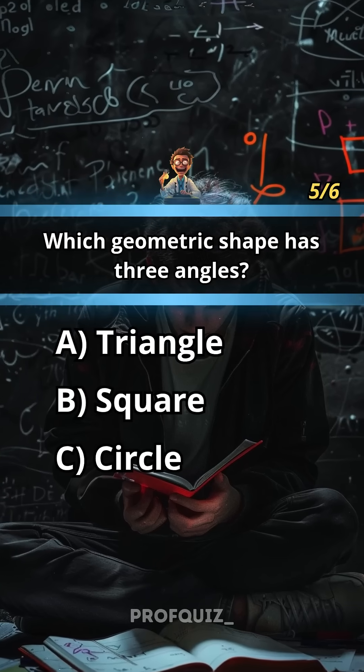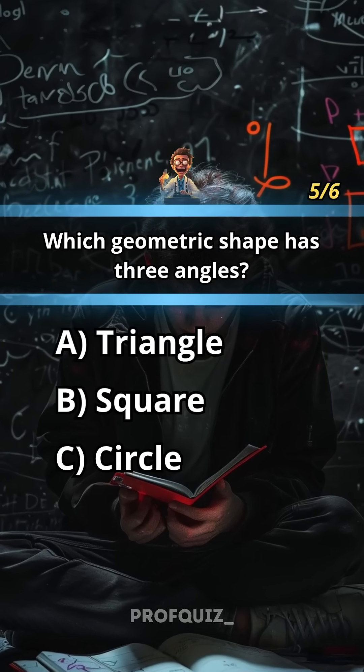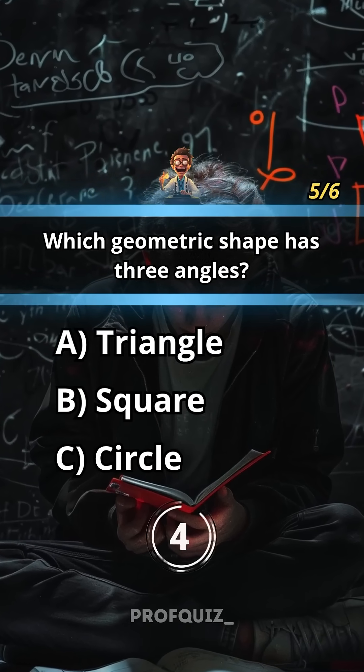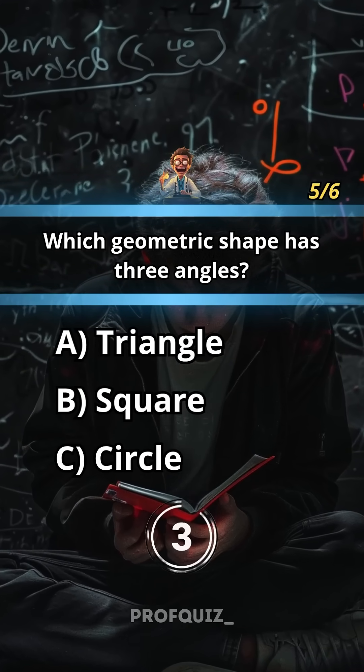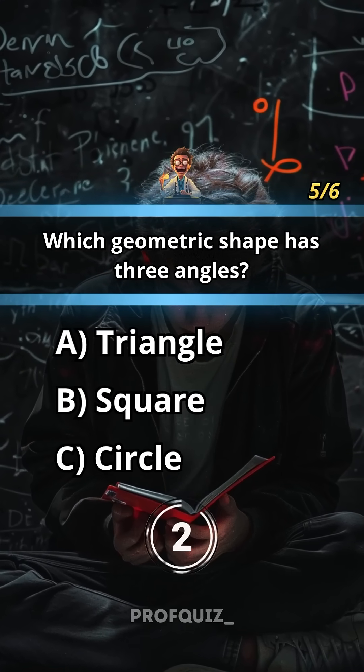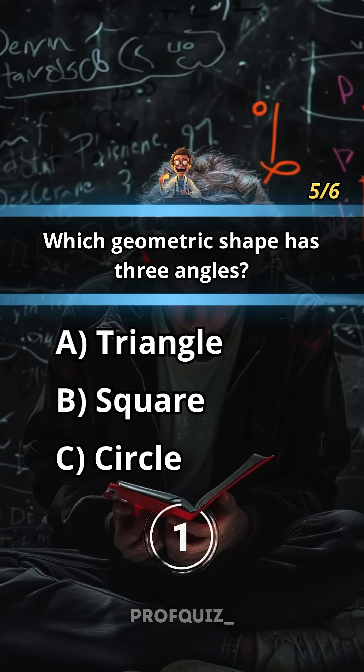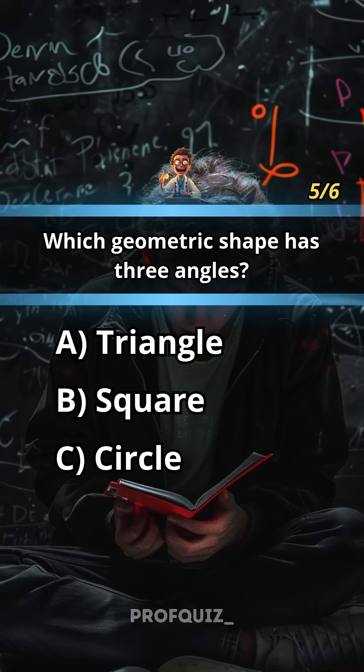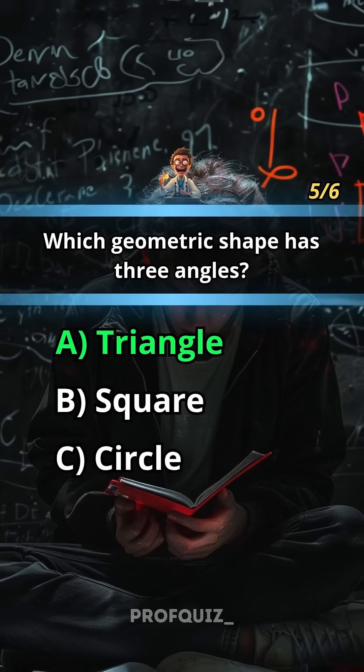Which geometric shape has three angles? Like this quiz if you enjoyed it. Answer: A, triangle.